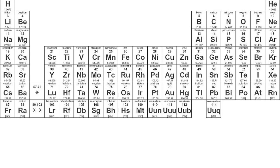Welcome to this video looking at bonding and intermolecular forces. First of all, we're going to look at bonding in the periodic table — specifically the bonding within different elements. The elements on the left-hand side of the periodic table, highlighted in yellow, all bond via metallic bonding.